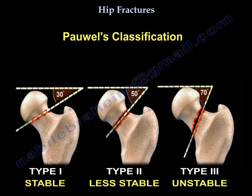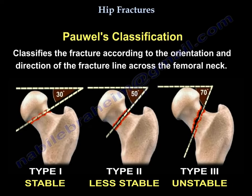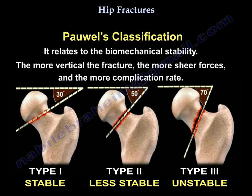The Pauwels classification has three fracture types and classifies the fracture according to the orientation and direction of the fracture line across the femoral neck. It relates to biomechanical stability. The more vertical the fracture, the greater the shear forces and the higher the complication rate.